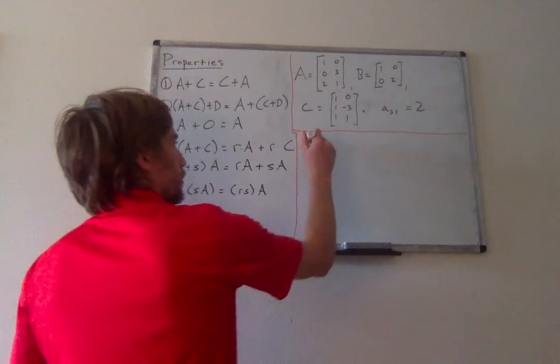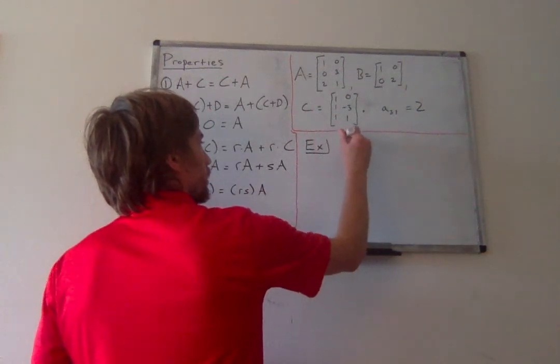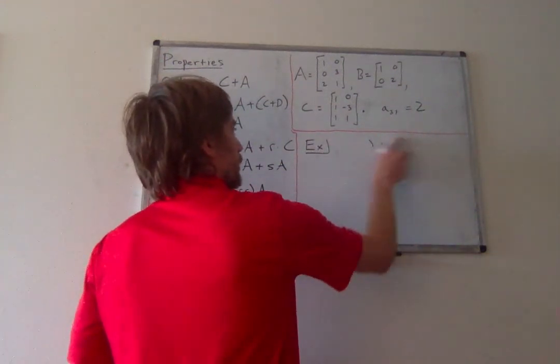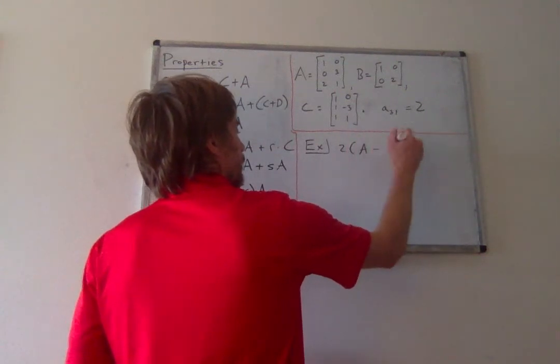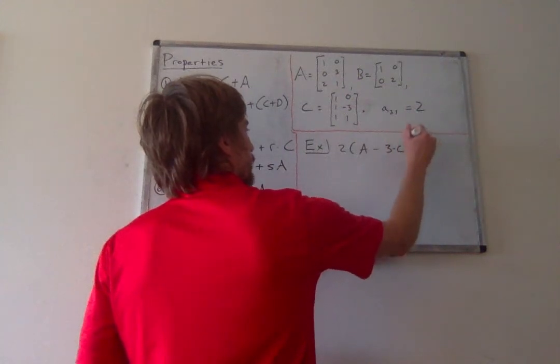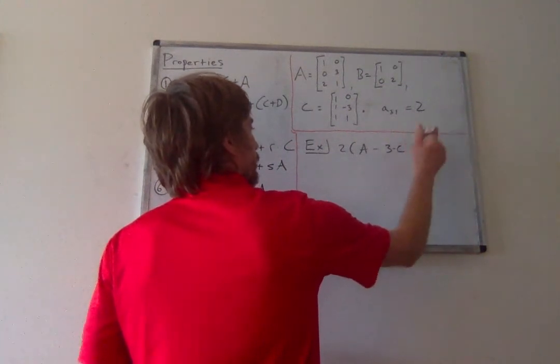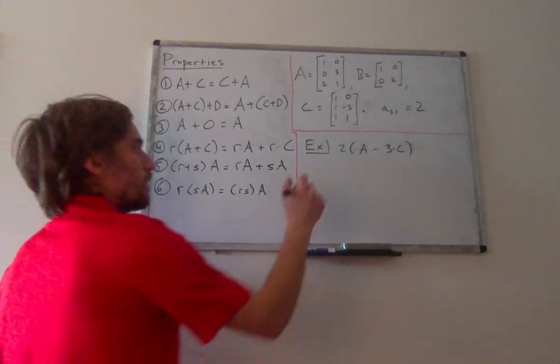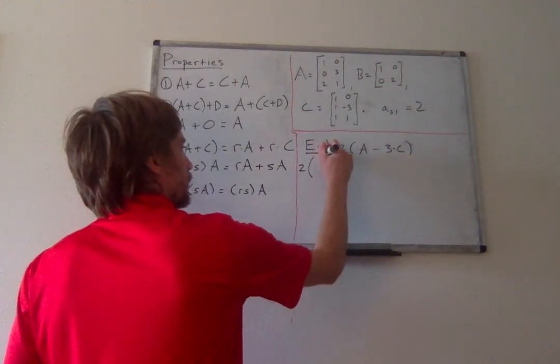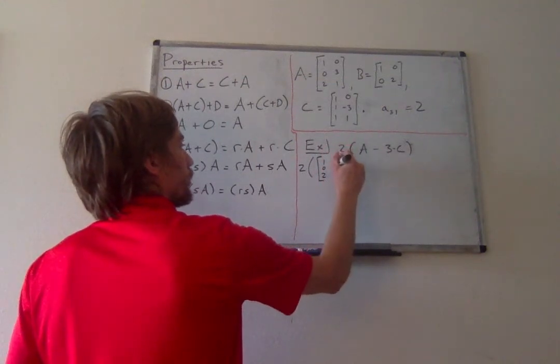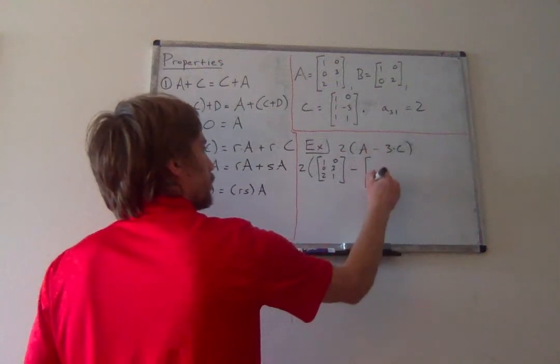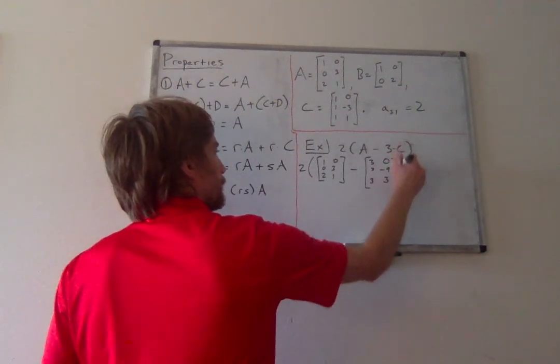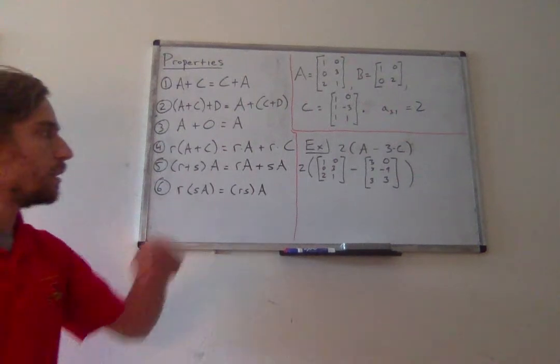So one last example. We could now calculate something like this. Let's do something a little more interesting, I guess. We could do 2 times A minus 3C using our properties of matrix scalar multiplication. So this is equal to 2 times the matrix 1, 0, 2, 0, 3, 1, minus. We'll distribute that 3 through the C. So 3, 3, 3, 3, 0, negative 9, 3. Then we can distribute the 2 through.